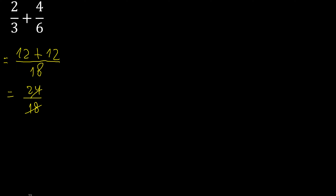24/18 can be simplified because both can be divided by the same number. Divided by 2: 24 divided by 2 is 12, 18 divided by 2 is 9. Then divided by 3: 12 divided by 3 is 4, 9 divided by 3 is 3.